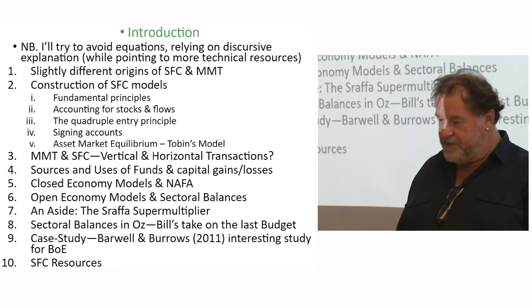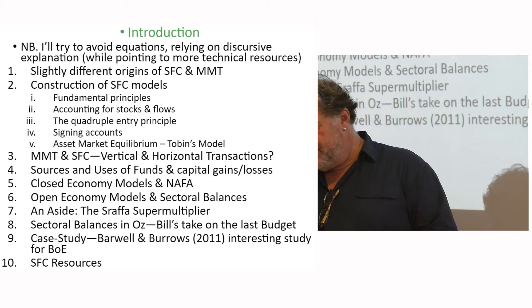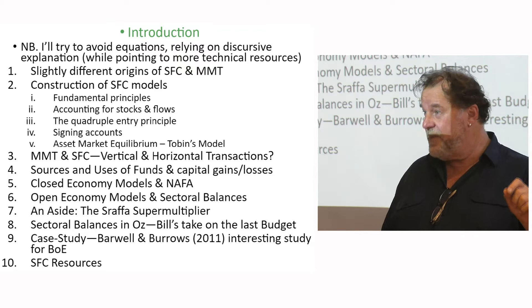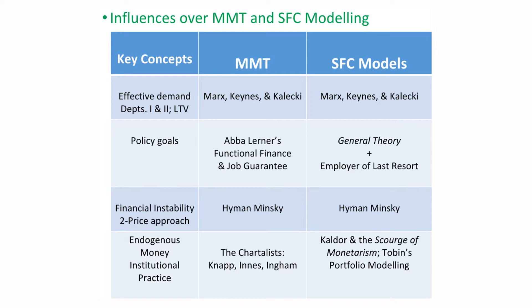I'll touch on the Sraffian supermultiplier, which is a topic of quite some interest at the moment. I'll look at the last Australian budget and how you can apply sectoral balances in that context, and a case study of Bank of England work using a stock-flow consistent approach to financial instability. Then I'll look at some resources available for stock-flow consistent modelling.